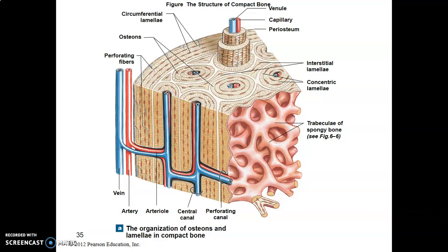The last cell type is osteoclasts, which are large multinucleated cells with five to fifteen nuclei. They have a ruffled border with microvilli and are housed within Howship's lacunae. They are members of the monocytic phagocytic system. Their main role is bone resorption — their lysosomes contain proteolytic enzymes able to break down bone to keep it healthy.